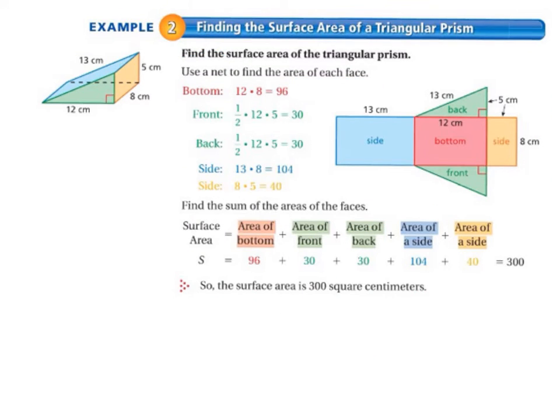Example 2, we'll be finding the surface area of a triangular prism. So just like your key idea showed you yesterday, we'll be using a net to find the surface area of each face. So we unfold it, flatten it, and then we have something that looks like this.